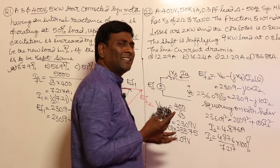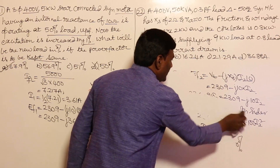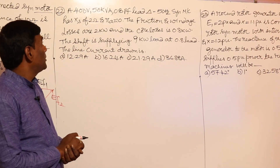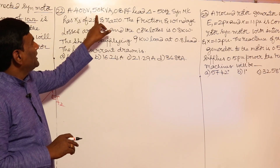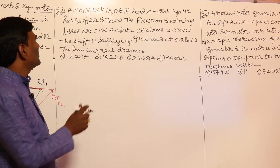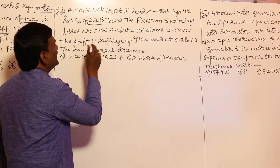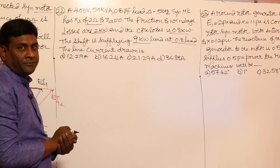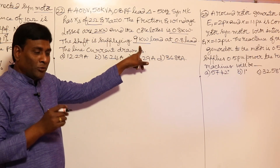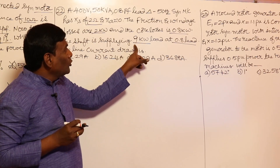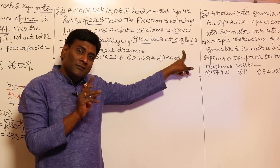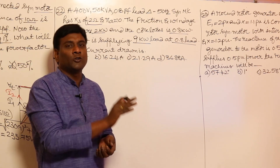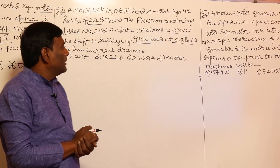Now the second problem: a 400 volts, 50 kVA, 0.8 power factor lead, delta-connected, 50 Hz synchronous machine has a reactance of 2 ohms with negligible armature resistance. Friction and windage losses are 2 kilowatt and core loss is 0.8 kilowatt. The shaft is supplying 9 kilowatt at 0.8 lead. Important note: motor output is always active power only — leading or lagging applies only to input current, not output. They are asking for the line current on the input side.